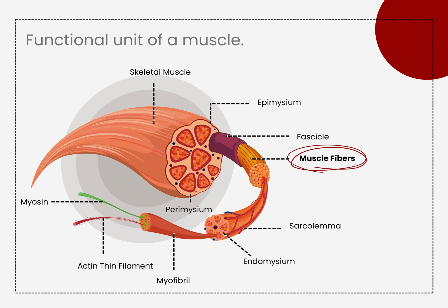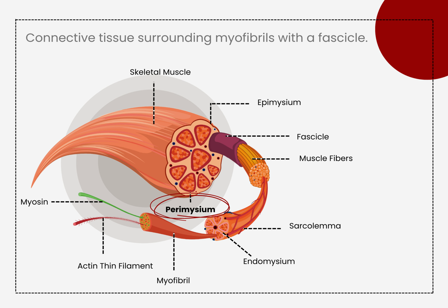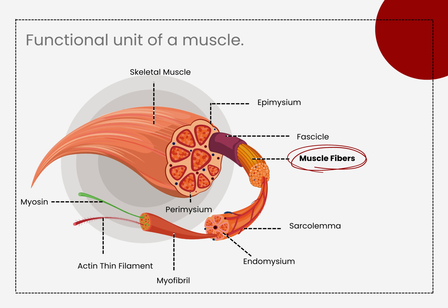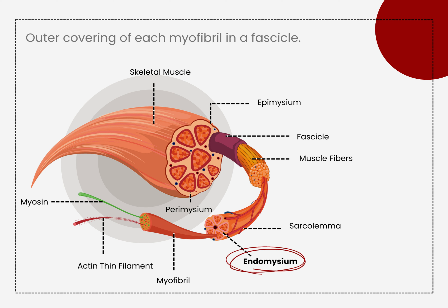Each bundle of muscle fiber is called a fasciculus and is surrounded by a layer of connective tissue called the perimyceum. Within the fasciculus, each individual muscle cell called a muscle fiber is surrounded by connective tissue called the endomyceum.